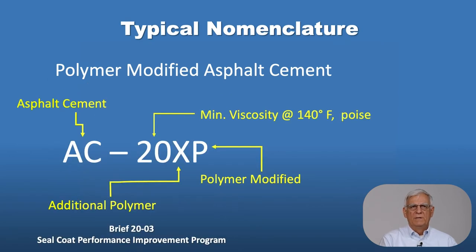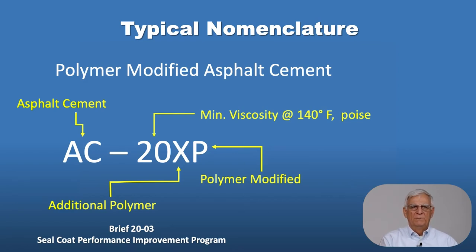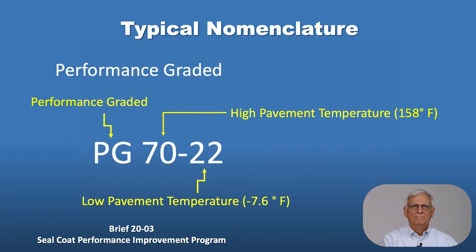The AC 20-XP — the P indicates polymer modified, AC for asphalt cement, the 20 indicates the viscosity, and the X indicates typically a little bit extra polymer in that particular material. These materials are used for sealcoat applications primarily. Very common materials used in this state in terms of quantity are for hot mix hot lane applications or hot mix asphalt pavement materials.